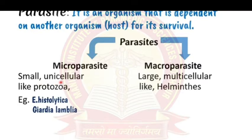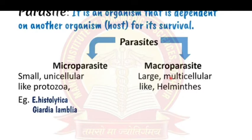Microparasites are small and unicellular — made up of only a single cell — like protozoa, such as Entamoeba histolytica and Giardia, which has a trophozoite with a teardrop shape. Macroparasites are large in nature, such as Ascaris lumbricoides, which can reach 15 to 30 centimeters in length, because they are multicellular.